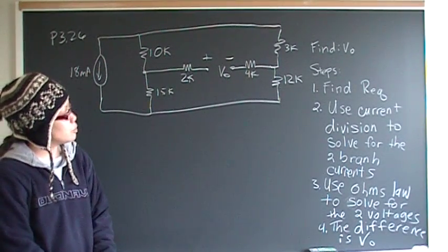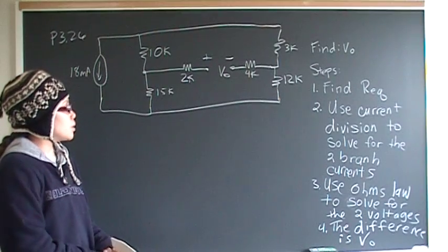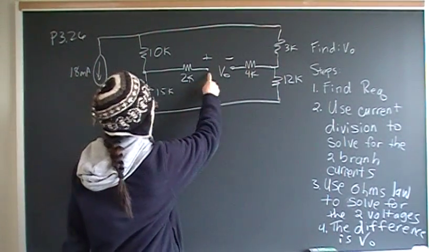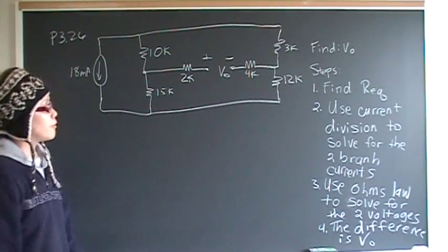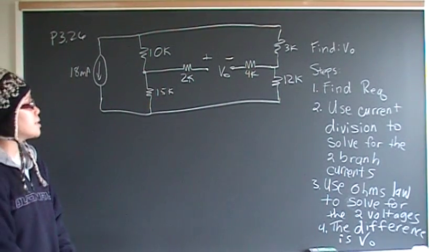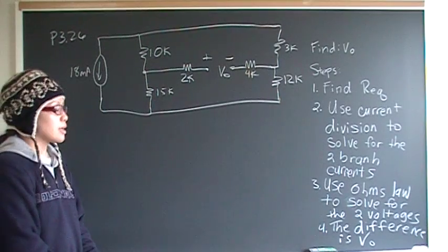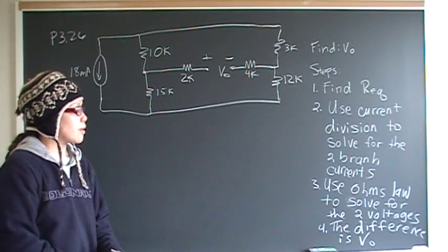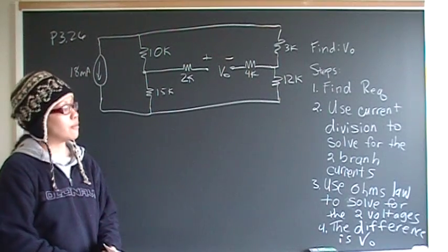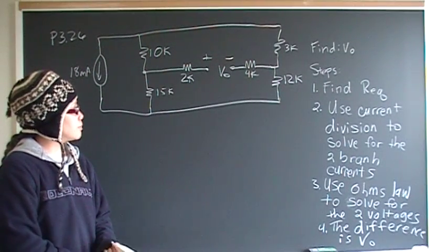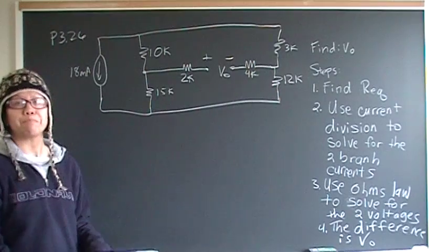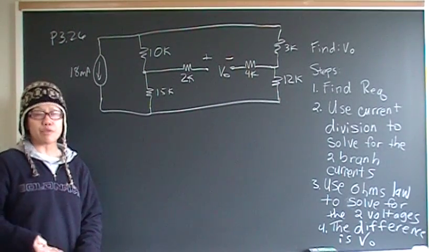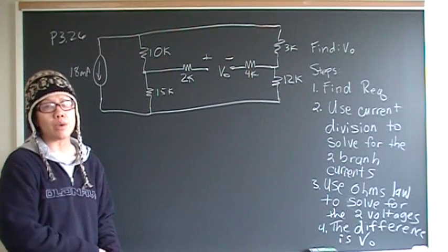And after you find the two branch currents, you will use Ohm's law to solve for the two voltages. You'll get a voltage here and a voltage here. And the final step, step 4, is to take the difference of those two voltages. Be careful with the passive sign convention, because it affects your answer — whether this is going to be a positive or negative voltage. The difference between those will be your answer. So pause the video right now and try it, and after you get an answer, start the video and check it.